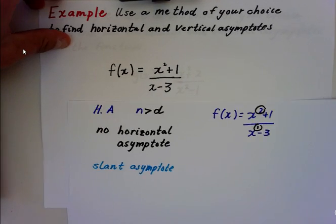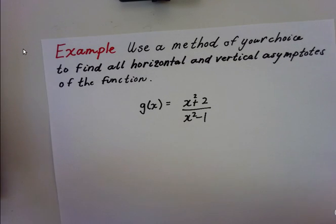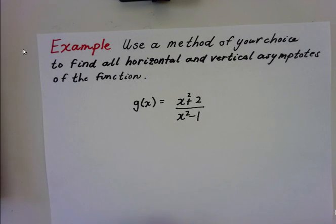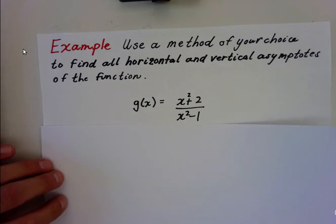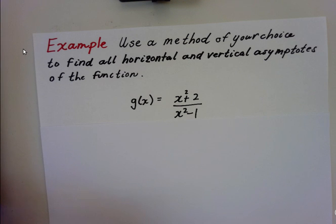Now, let's look at our last example. Again, use any method of your choice to find the horizontal and vertical asymptotes. Again, I like to start with the vertical asymptotes.